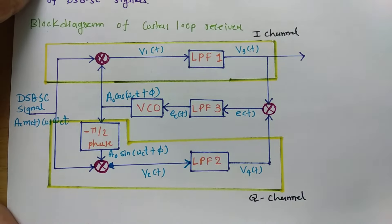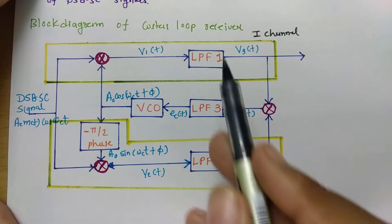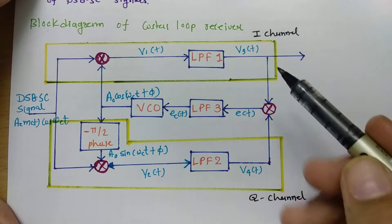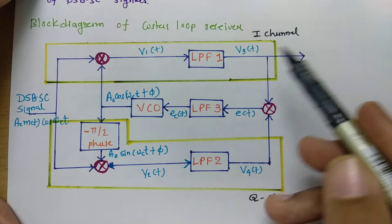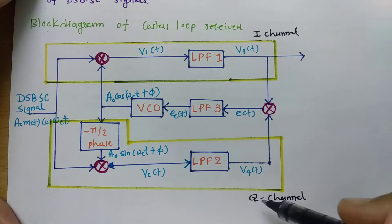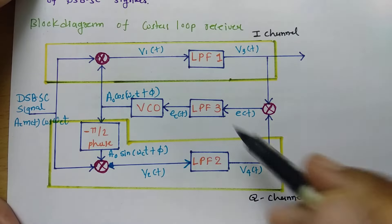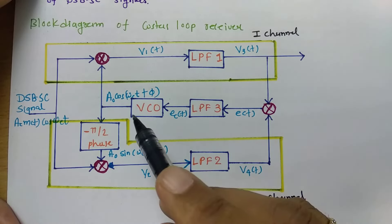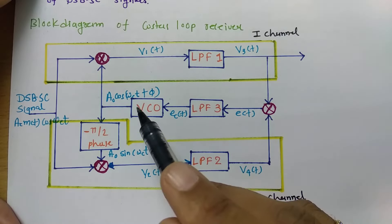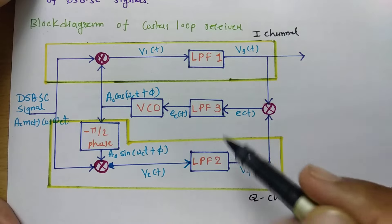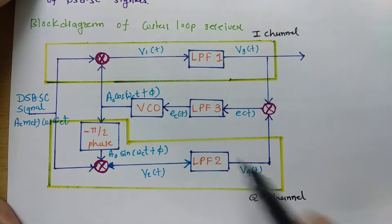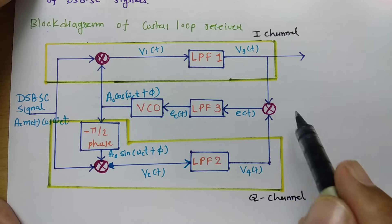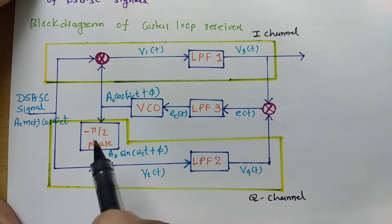Let us start with the block diagram of the Costas loop receiver. If you see this block diagram, you can divide it into three parts: one is the I channel, second is the Q channel, and third is the error signal generation. So this is how we can segment this complete block diagram — I channel, Q channel, and error signal.